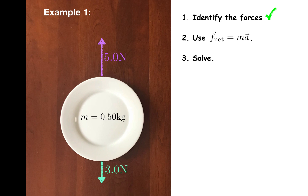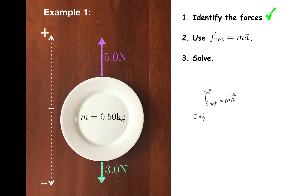To use F net equals ma, you should look at the force diagram, read off the forces acting on the object, and replace F net in the equation with those forces. Let's call this the y direction, and I'll designate the direction toward the top of the screen as positive. In that case, F net is 5.0 j hat minus 3.0 j hat, and the mass of the plate is 0.50 kilograms. Simplifying the left-hand side and dividing by m, the acceleration of the plate is 4.0 meters per second squared j hat, or 4.0 meters per second squared toward the top of the screen.